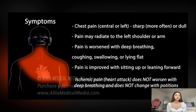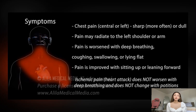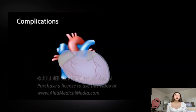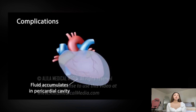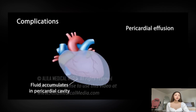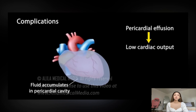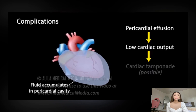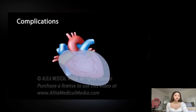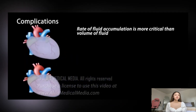Pericardial pain is worsened by lying flat and improved with sitting up or leaning forward. Inflammation of the pericardium can cause fluid to accumulate in the pericardial cavity — this is called pericardial effusion. The increased fluid volume may limit cardiac filling, leading to low cardiac output and sometimes life-threatening circulatory shock, known as cardiac tamponade. The rate at which fluid accumulates is often more critical than the volume of fluid.